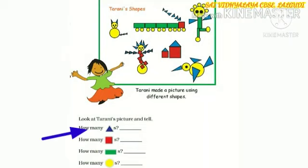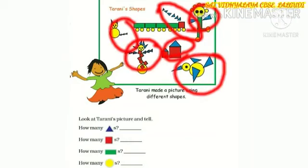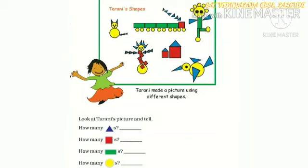Means, you have to count all the triangles which have given in the picture. Here, all the triangles are in blue color. So, here we have 30 triangles.